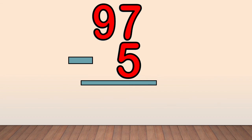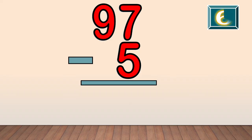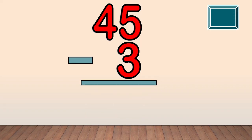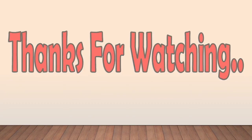97 minus 5. Time's up, the answer is 92. 45 minus 3. Time's up, the answer is 42. That's all for now. I hope you enjoyed learning about subtracting one digit from two digit numbers without regrouping. Thanks for watching.